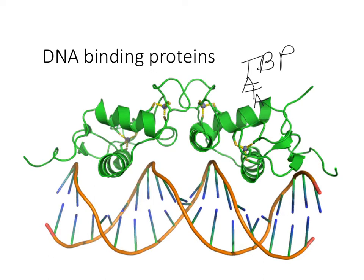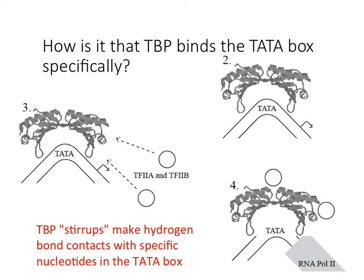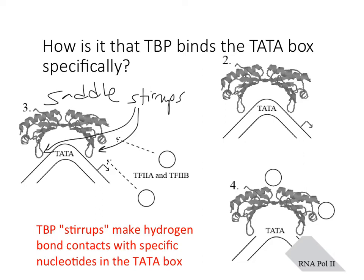This is TBP — a crystal structure of it bound to DNA. TATA binding protein has a saddle structure where it binds to DNA and actually physically bends the DNA. There are amino acids in TBP's stirrups that physically contact the nucleotides that TBP is reading — that's how it senses the nucleotide sequence it's binding to, through contacts between those amino acids in the stirrup domains and the DNA sequence.